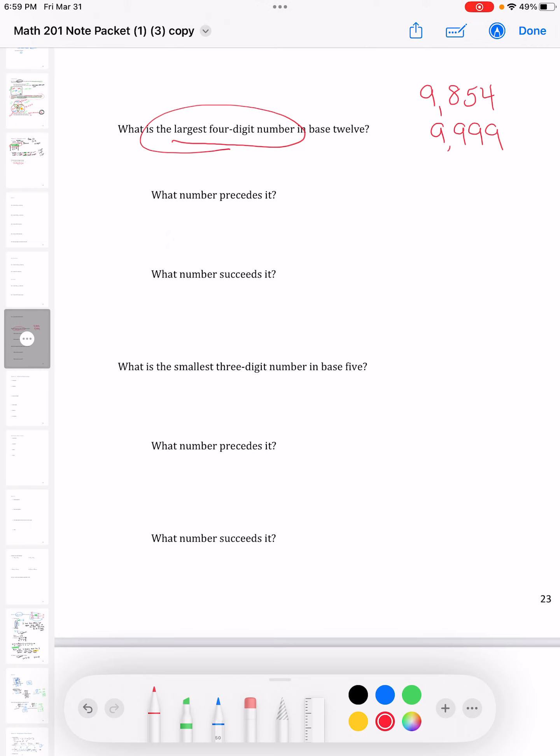10,000 is a five-digit number. One, two, three, four, five. So we can't go 10,000. That's as big as I can get in four digits.